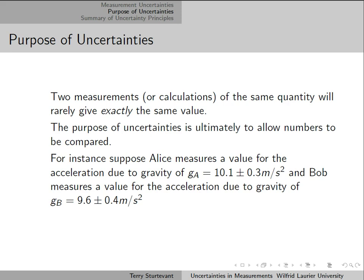For instance, suppose Alice measures a value for the acceleration due to gravity and gets 10.1 plus or minus 0.3 meters per second squared. And Bob gets a value of 9.6 plus or minus 0.4 meters per second squared. The question we want to answer is, are those two values different?